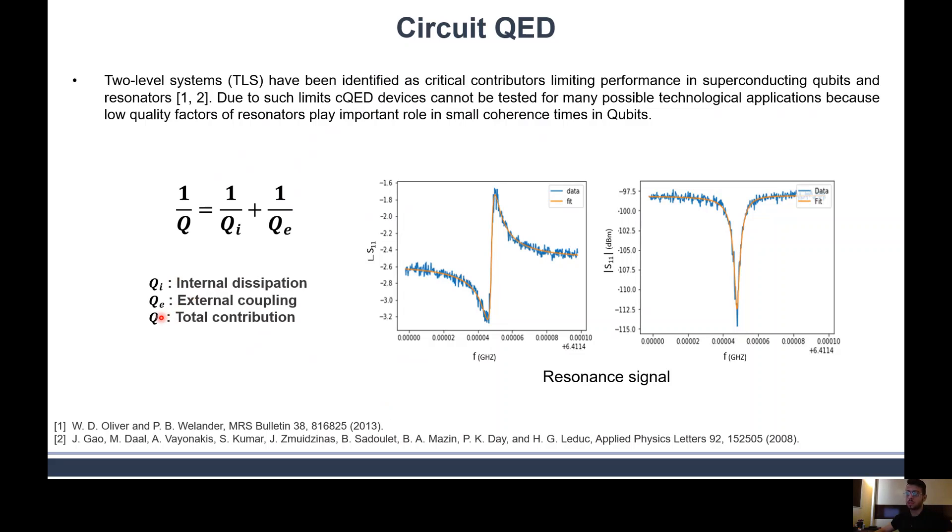One measure for that is the quality factor, which has three parameters: the internal quality factor, which is the measure of how much dissipation in the device; external quality factor, which is a measure of how much the system is actually coupled to the external world, how much the qubit is coupled to the resonator; and total quality factor, which is the total contribution of both.